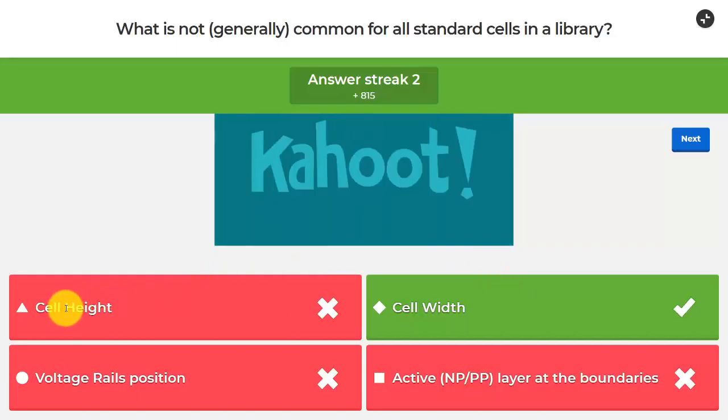So going back to the Kahoot answer, cell height is constant. That is the constant site has a specific height which is the row size, the distance between the two voltage rails VDD and ground. The voltage rails position is also very constant for all the standard cells in the library. The active area layer at the boundary, on the left and the right side and top and bottom as well, we have to have the active area to be the same for all standard cells so that when we put another cell next to it in abutment we'll have a continuation of that layer without some sort of design rule violation. The cell width however is not common for all of them. The cell width is going to be a multiple of the site but it's going to be different for each standard cell in the library.